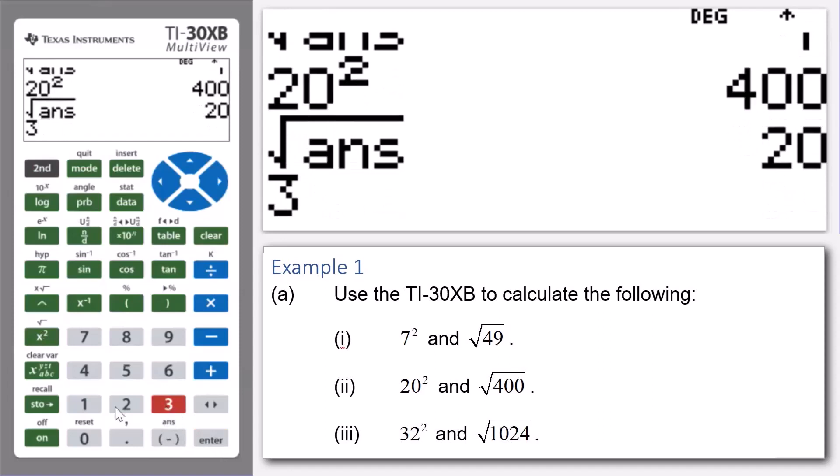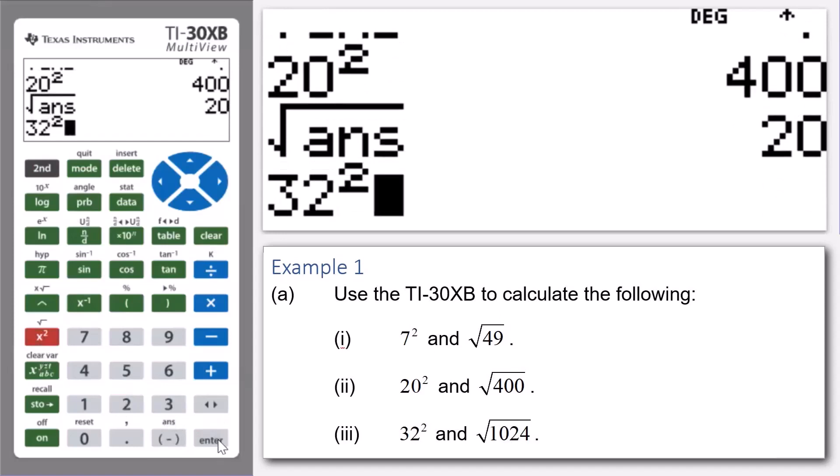Now, let's enter 32, press X squared, press enter, and 32 squared is equal to 1024.